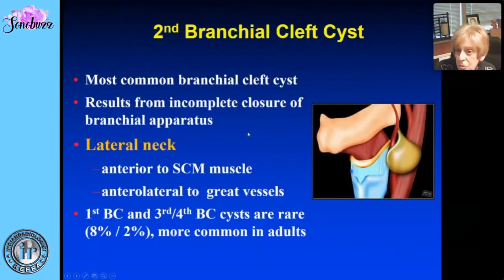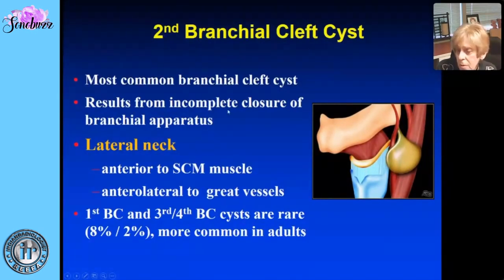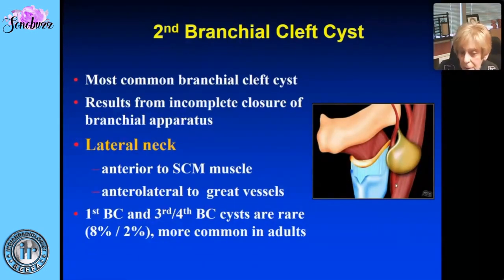The second branchial cleft cyst is the next most common congenital lesion, and it is the most common of all the branchial cleft cysts. It results from incomplete closure of the branchial apparatus — present in the fetus and giving rise to critical neck structures. There are five clefts and six arches in the branchial apparatus. The second branchial cleft cyst arises from the second arch. It is anterior to the sternocleidomastoid muscle, anterolateral to the vessels, and in the lateral neck — that's your key clue.